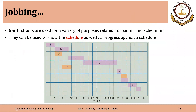Another important element in job shop scheduling — and very important in project management — is the Gantt chart. Gantt charts are used for a variety of purposes related to loading and scheduling, and they can be used to show the schedule as well as progress against the schedule. Time is shown on the horizontal axis, generally at the bottom, and activities are shown as horizontal bars. For example, activity A takes 4 weeks, activity B takes around 7 weeks, and so on.